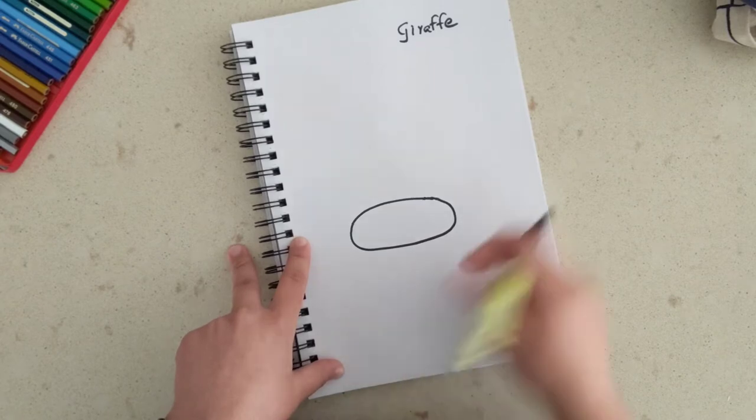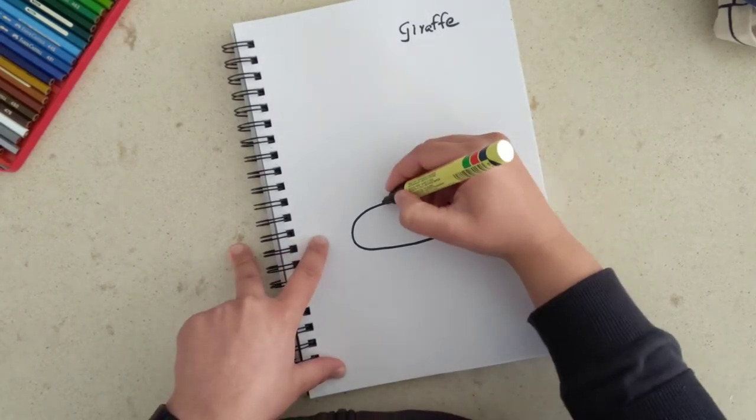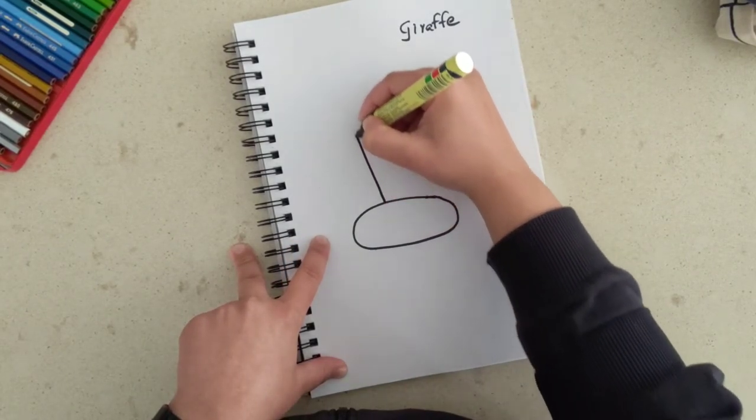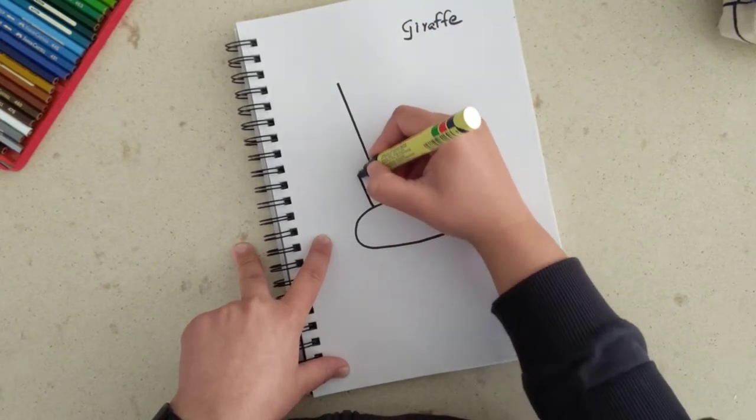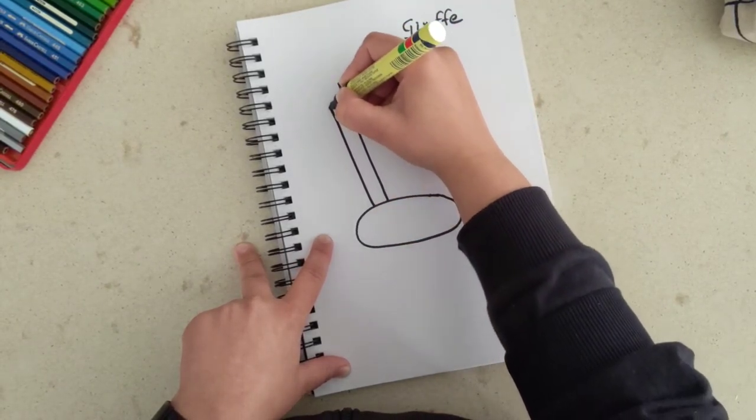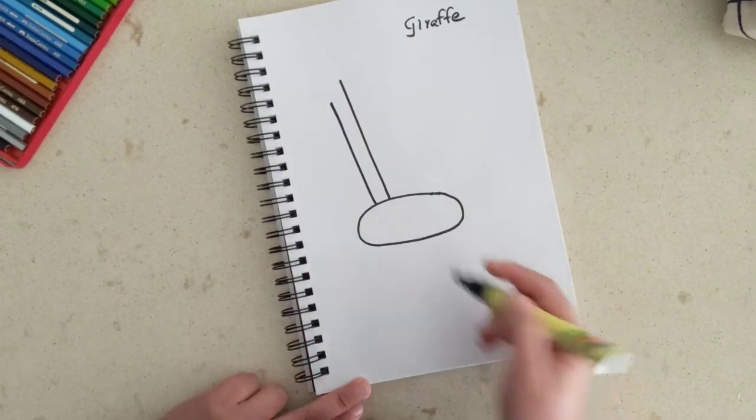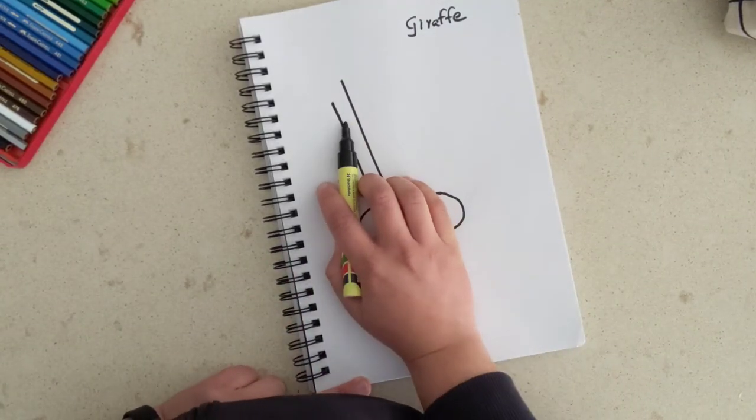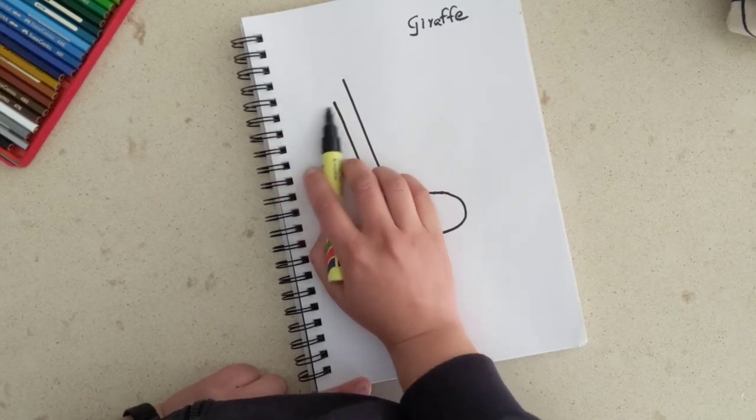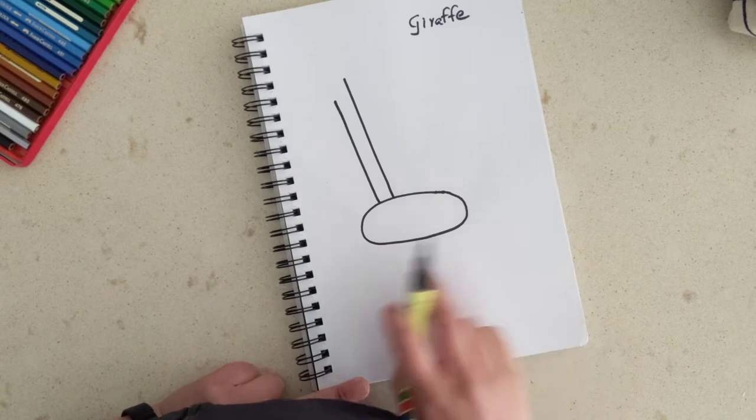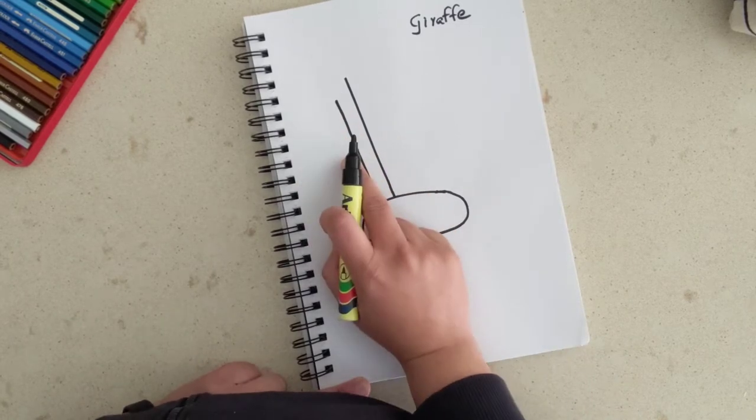Now we go and draw the giraffe's long neck. Just draw two lines extending upwards from the stomach, from the tummy. I've kept one line longer than the other, be careful, make sure you do that. So we'll draw his face over here in just a second. You've got his tummy, you've got his long neck.